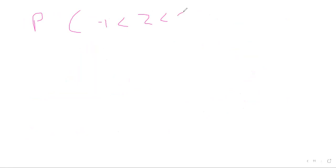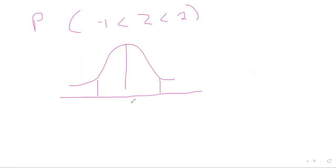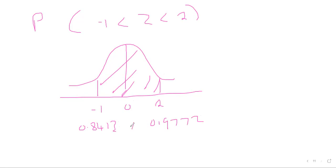For two values on opposite sides — negative 1 and positive 2 — this crosses the boundary. Use case 3: add the two probabilities and subtract 1. So 0.9772 plus 0.8413 minus 1 = 0.8185. That is the final answer for the interval between negative 1 and positive 2.